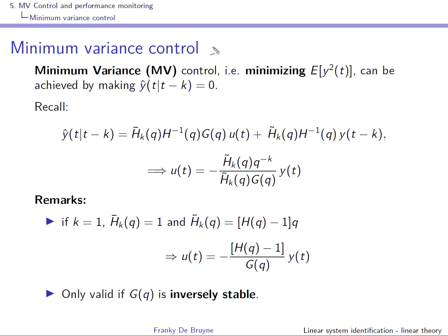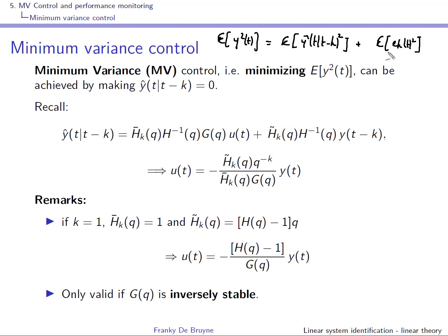The variance of Y can be written in terms of the variance of the K-step-ahead prediction and the variance of the error term E of K T. We have a process with a delay of K, so you cannot affect the error term. Given data up to time T minus K, your best guess of this error is zero. The only term you can affect — because the process has delay K — is the K-step-ahead prediction. So if you want to minimize the variance of Y, this can be achieved by making the K-step-ahead prediction zero.